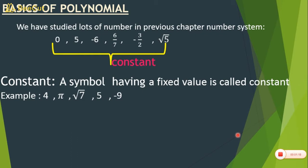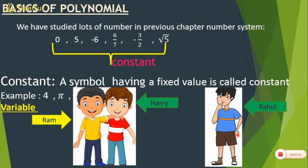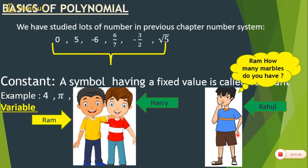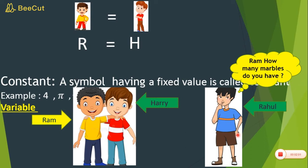Now, what is a variable? Let me explain with an example. Ram and Harry are two friends. They were playing marbles. On the way, their friend Rahul meets them and asks Ram: 'How many marbles do you have?' Ram, instead of answering directly, says: 'I have two more marbles than Harry.' So if Harry has 5, Ram has 7.